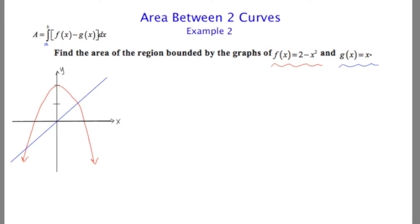In this video, I'm going to show you another example of how to find the area between two curves. Find the area of the region bounded by the graphs of f of x equals 2 minus x squared and g of x equals x.